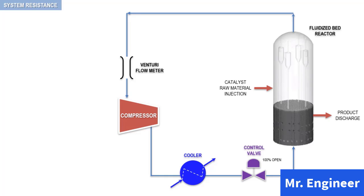To do that, I will use the following process example. This is a simplified scheme of a polyethylene gas phase process. The process typically comprises of a fluidized bed reactor, a centrifugal compressor, a cooler, and a control valve.